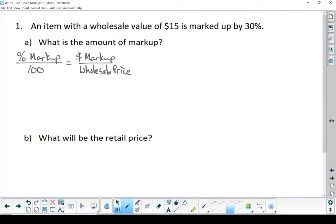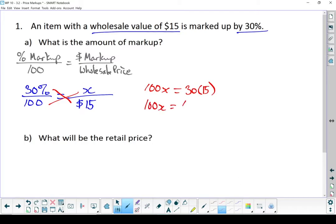Percent markup over 100 equals dollars markup over the wholesale price. Let's put in our numbers. I've got a 30% markup. Always goes over 100. I've got a wholesale value of $15. And the piece I don't know is how many dollars is it marked up. Put an X there. Let's cross multiply. X times 100 and 30 times 15. 100X equals 450. I'm going to divide both sides by 100. That leads me to X equals $4.50. And that is my markup. The store raises the price $4.50.